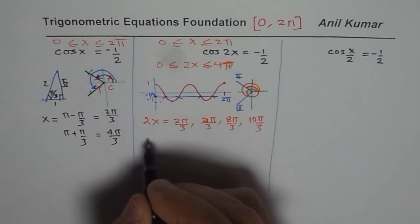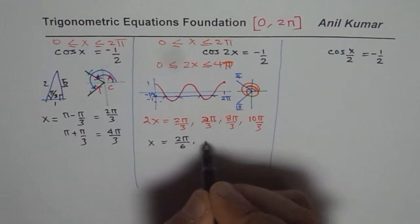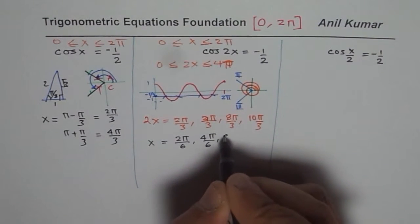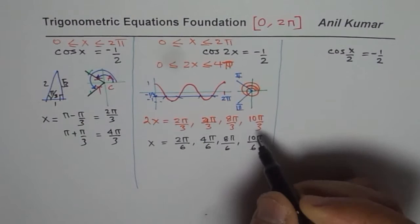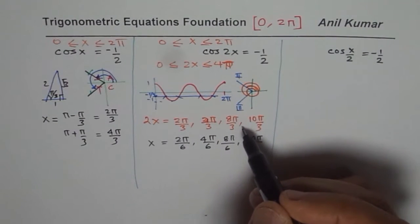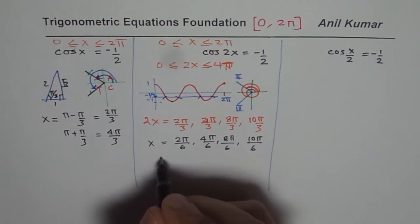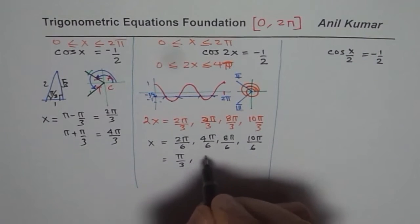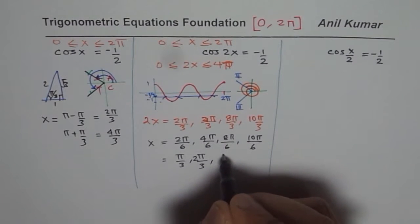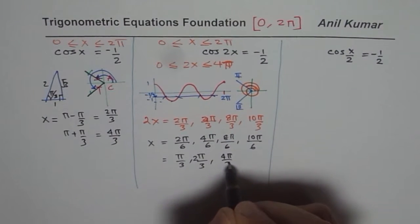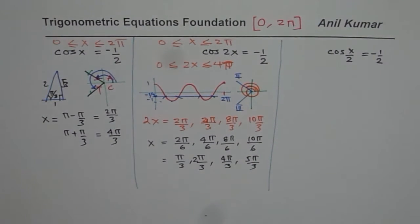And definitely, we have to divide by 2. Our solutions will be 2π by 6, 4π by 6, 8π by 6, and 10π by 6. So that is how you get your solutions. You can simplify this and then write this as π by 3, 2π by 3, 4π by 3, and 5π by 3. These are your solutions for the second case.